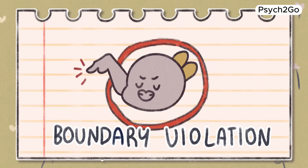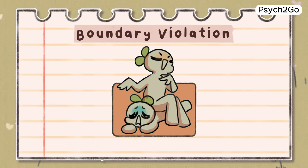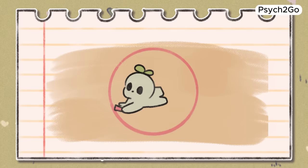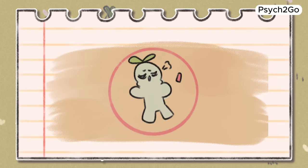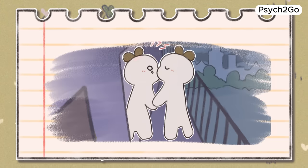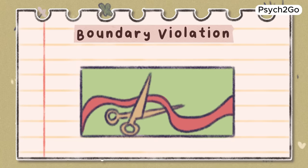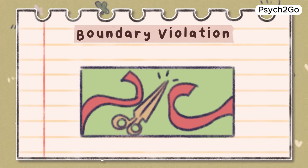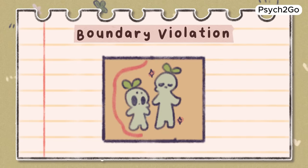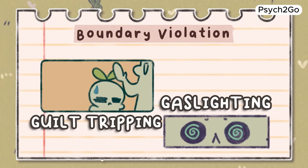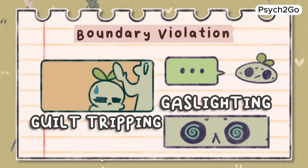Boundary violation. Manipulators want to see how far they can push you. If the boundary you have set is in the way of something they want — for example, if they want a sexual relationship and you do not — they may push or even break that boundary on purpose. Boundary pushing is usually paired with guilt tripping or gaslighting to make the action seem less distressing.